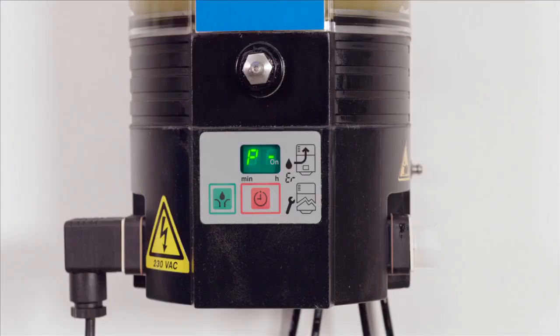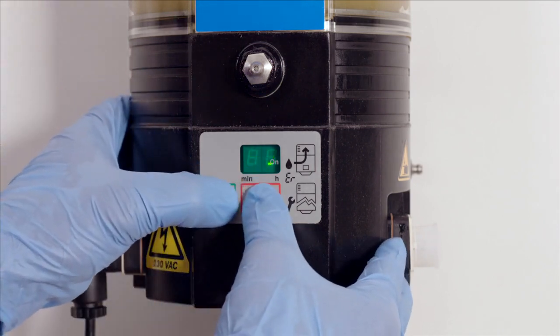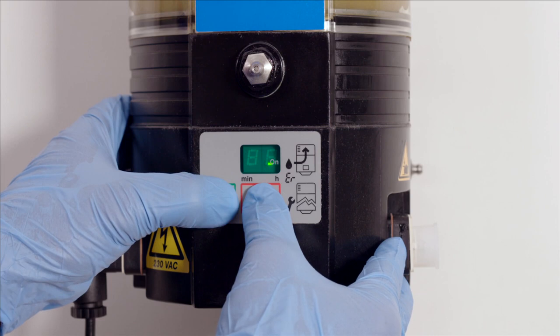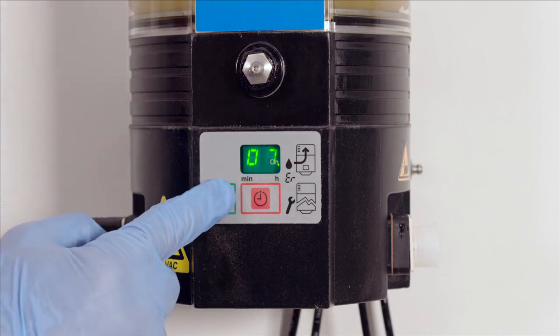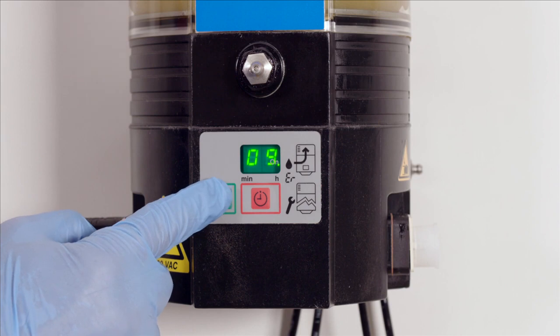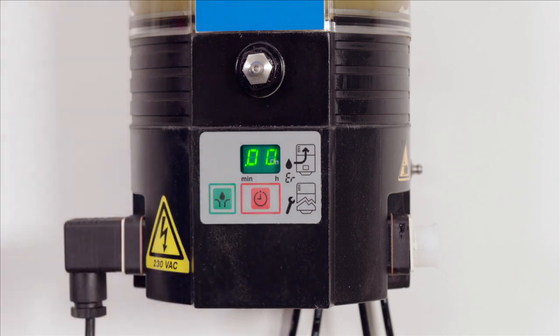To enter the programming mode, simultaneously press the green and the red keys in the keypad during at least 4 seconds. P1 should be displayed. In P1, the hour value of the pause time can be selected. Change the value by pressing the green key. Once the desired value is displayed, press the red key within 30 seconds to confirm.